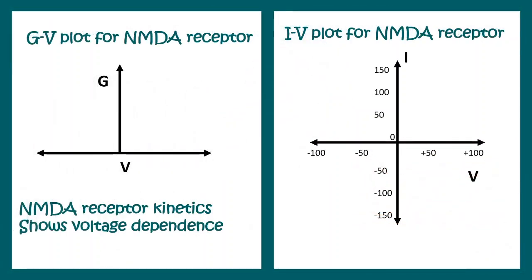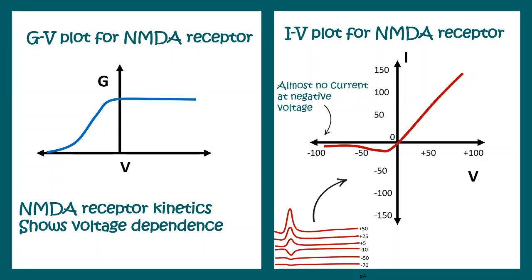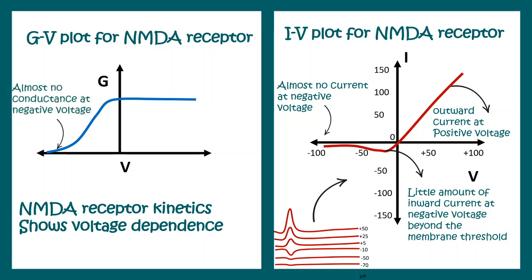In order to represent this in a better fashion, people use the IV plot and the GV plot. In the IV plot, we plot current versus voltage. At high negative voltages beyond the membrane threshold, there is almost no current. There is some inward current at negative voltages beyond the membrane potential threshold, and at positive voltages there is outward current. Similarly, if we look at the conductance versus voltage plot, we can see the conductance of the channel is almost zero at negative voltage.